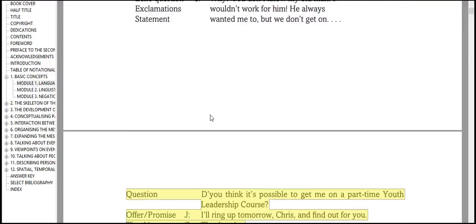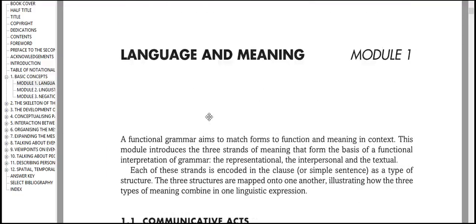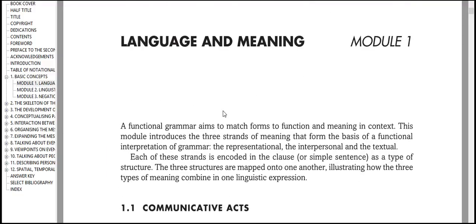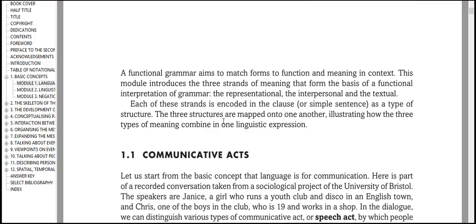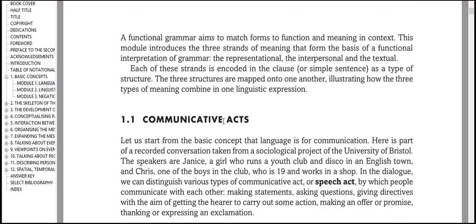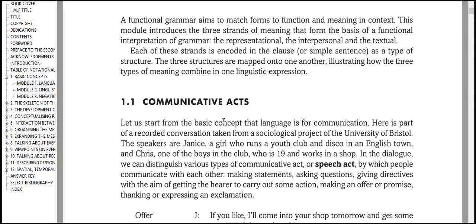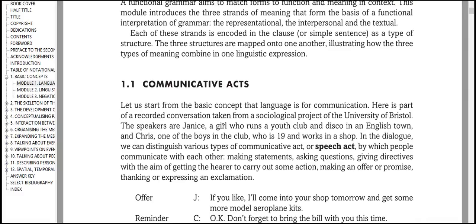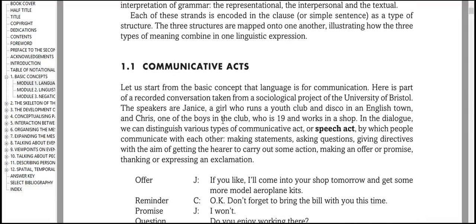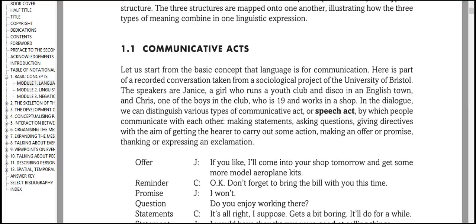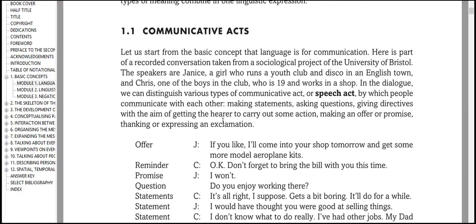Language and Meaning Module 1A: Functional Grammar aims to match forms to function and meaning in context. This module introduces the three strands of meaning that form the basis of a functional interpretation of grammar: the representational, the interpersonal, and the textual. Each of these strands is encoded in the clause as a type of structure. The three structures are mapped onto one another, illustrating how the three types of meaning combine in one linguistic expression.